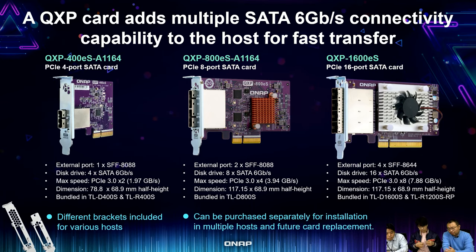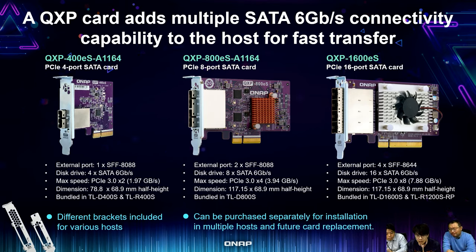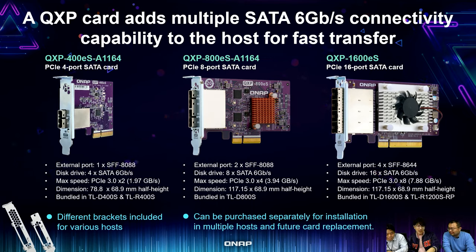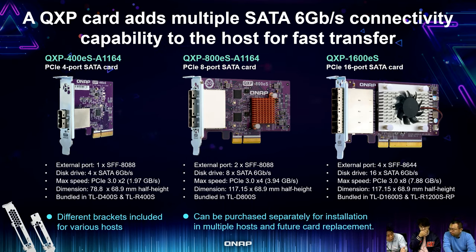One thing to note: the QXP-1600ES 16-port card uses a different connector — four SFF-8644 connectors instead of SFF-8088. This is because to fit into a half-height design we had to choose this square connector design. If we used the flat SFF-8088, we wouldn't be able to make it half-height. So the 16-port card uses a different connector technology — all cards are low-profile design.